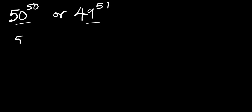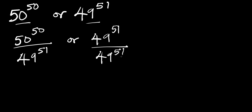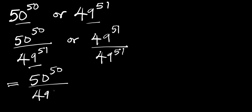What we can do is take 50 to the power of 50 and divide this by 49 to the power of 51. This gives us 50 to the power of 50 divided by 49 to the power of 50 plus 1, and dividing through you are going to have 1.